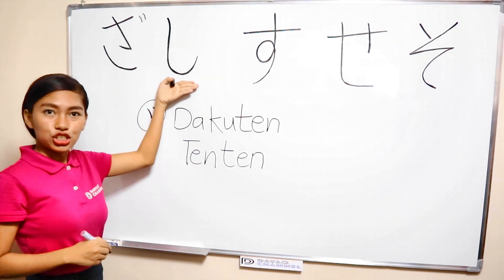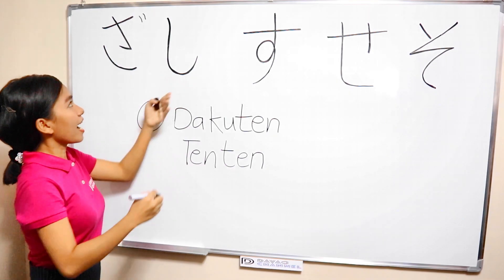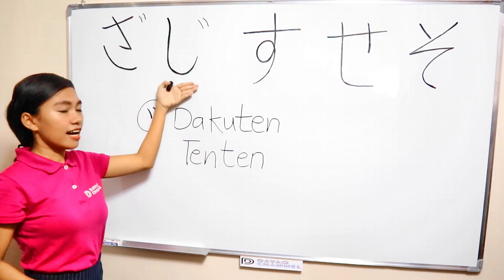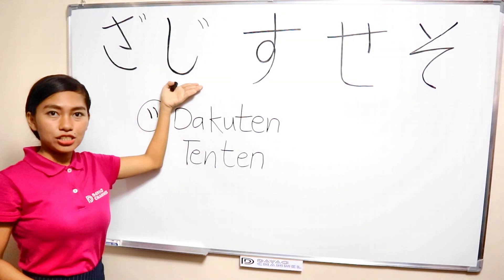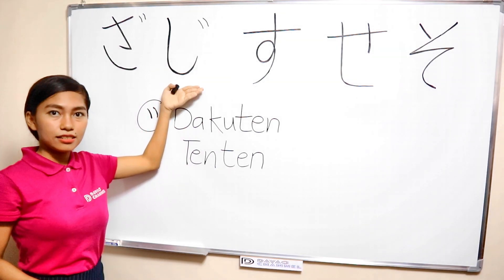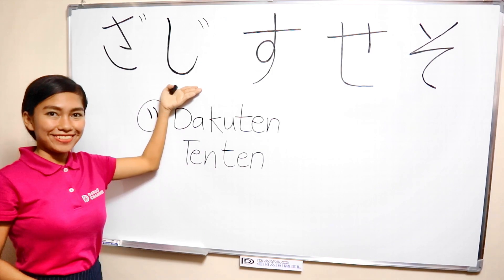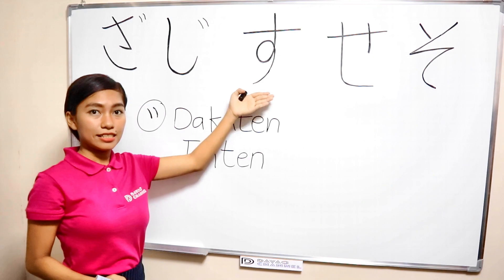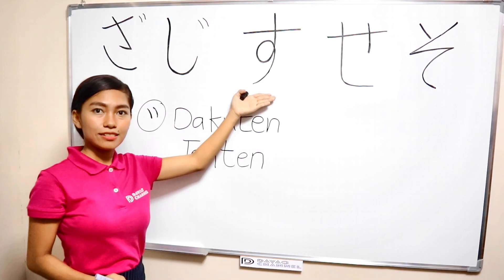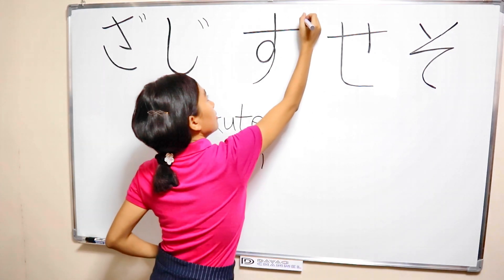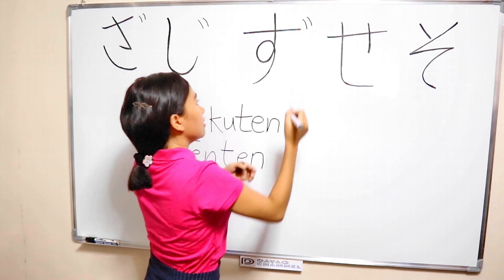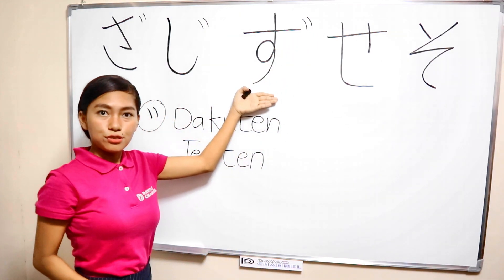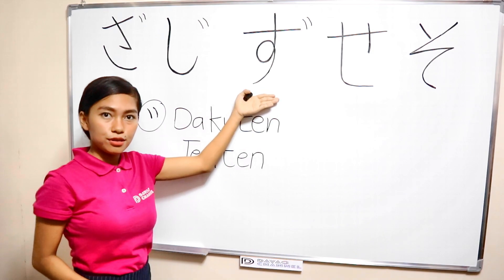This is shi. Just add tenten, and it becomes ji, ji, ji. Okay, next alphabet — su. This is su. Just add tenten, and it becomes zu, zu, zu.